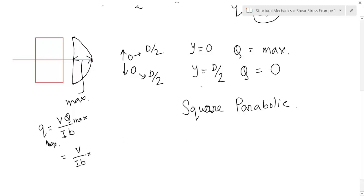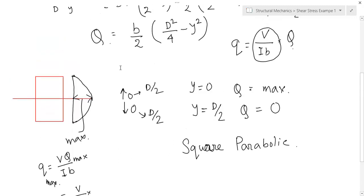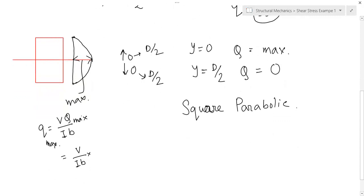So, where is Q max? At y equal to 0. The equation was b by 2, d square by 4 minus y square. So, b by 2 into d square by 4 minus y square.